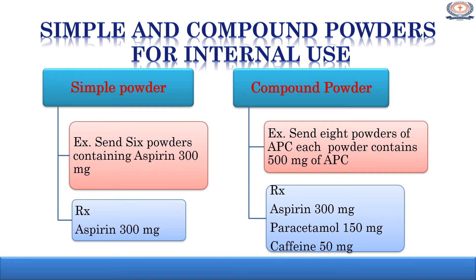For compound powder, the example is APC powder. Dispense eight powders of APC, where aspirin is 300 mg, paracetamol 150 mg, and caffeine 50 mg. The direction is one powder to be taken when need arises. In this case, we powder all ingredients, weigh the calculated quantity of each ingredient, and mix them in ascending order of their weight. Then weigh 500 mg of the mixed powder for each powder, wrap each dose in individual powder paper, pack flap to flap, and tie with an elastic band.